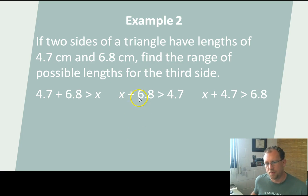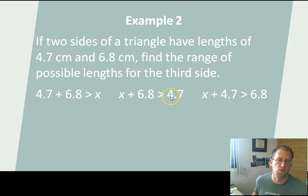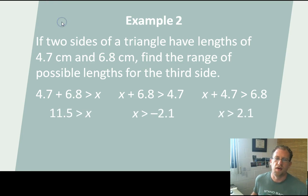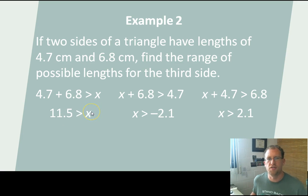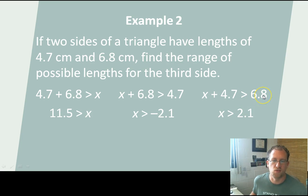But the unknown third side plus 6.8 has to be greater than 4.7, and the unknown third side plus 4.7 has to be greater than 6.8. This one right here doesn't really mean anything, because anything — 0 plus 6.8 is greater than 4.7. So this one, when we solve for it, doesn't really help us a whole lot. But this one lets us know a minimum, and this one lets us know the maximum that that third side length can be. Let's solve for x in all three so you can see why the second one is not very illustrative. Here, 4.7 plus 6.8 is 11.5, so 11.5 is greater than x, meaning the third side has to be less than 11.5 cm. This one over here, x is greater than 2.1, so the side length has to be bigger than 2.1 cm — so that it plus 4.7 is greater than 6.8.